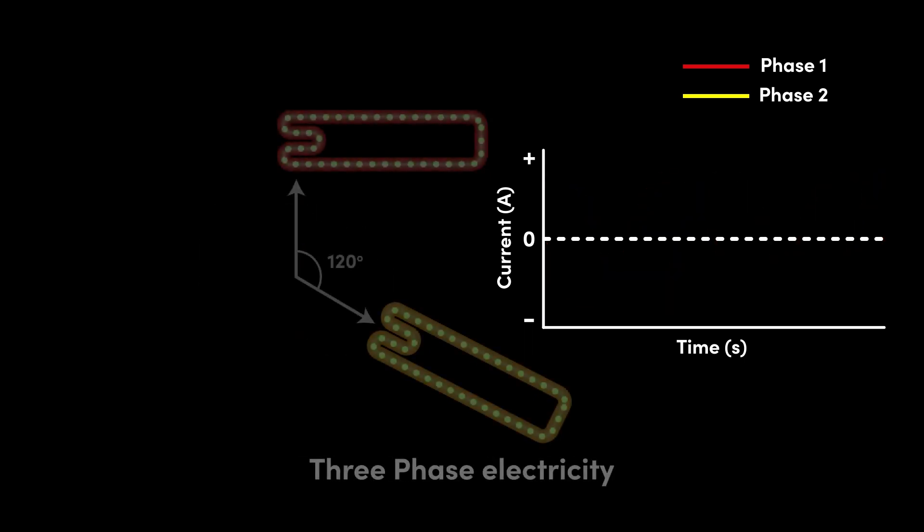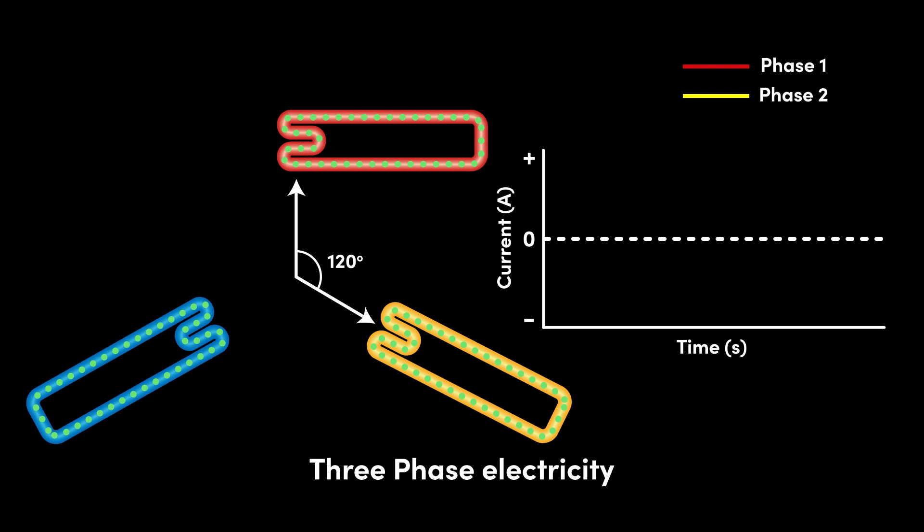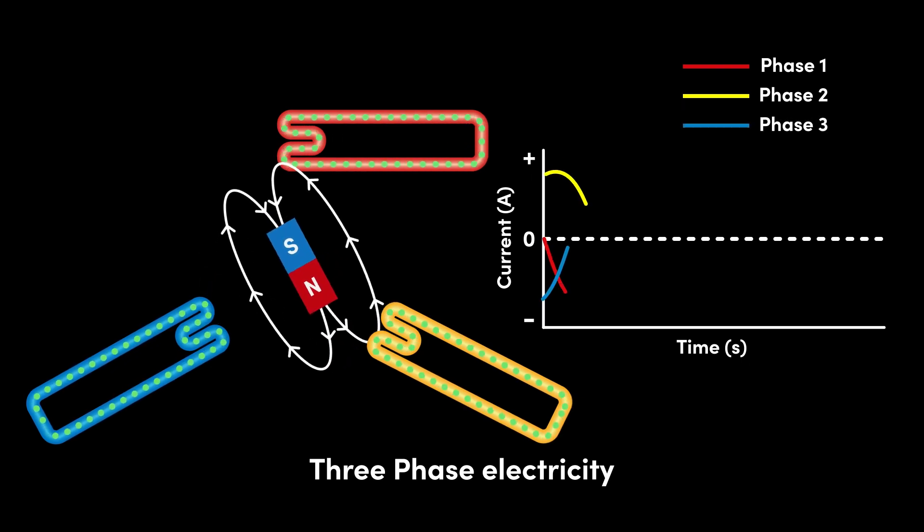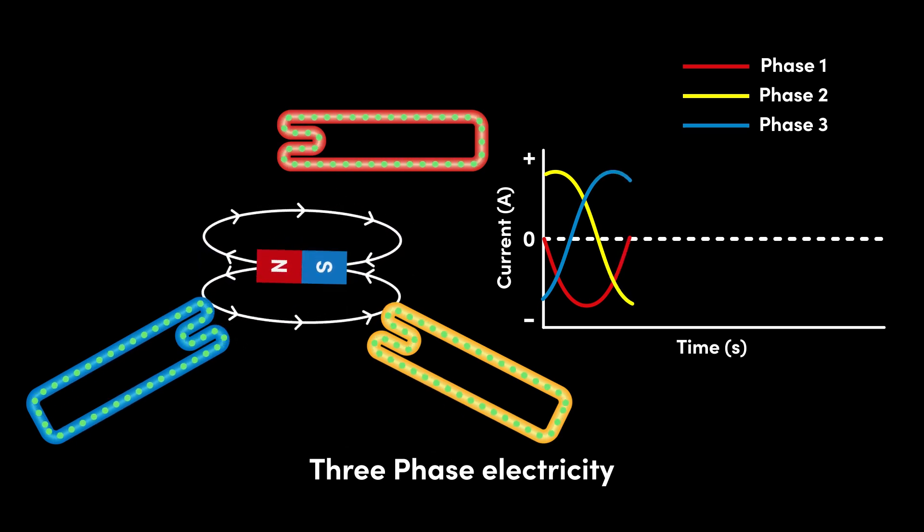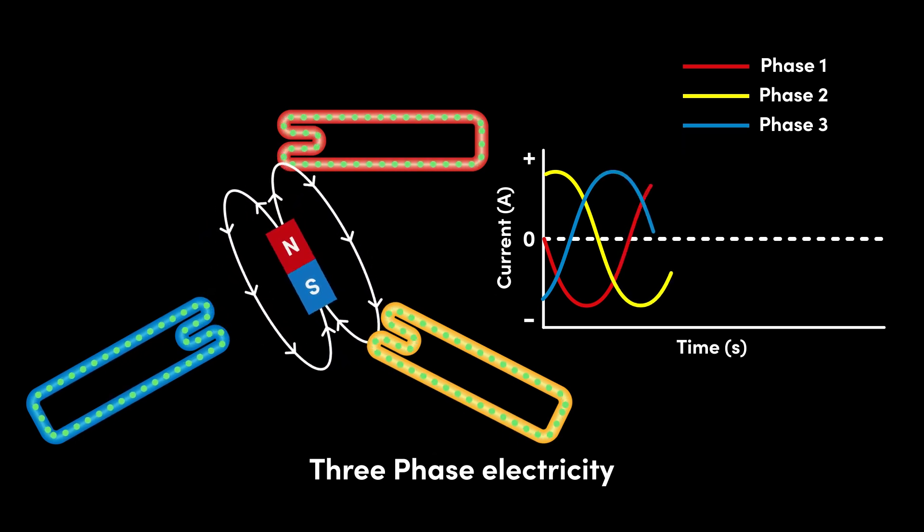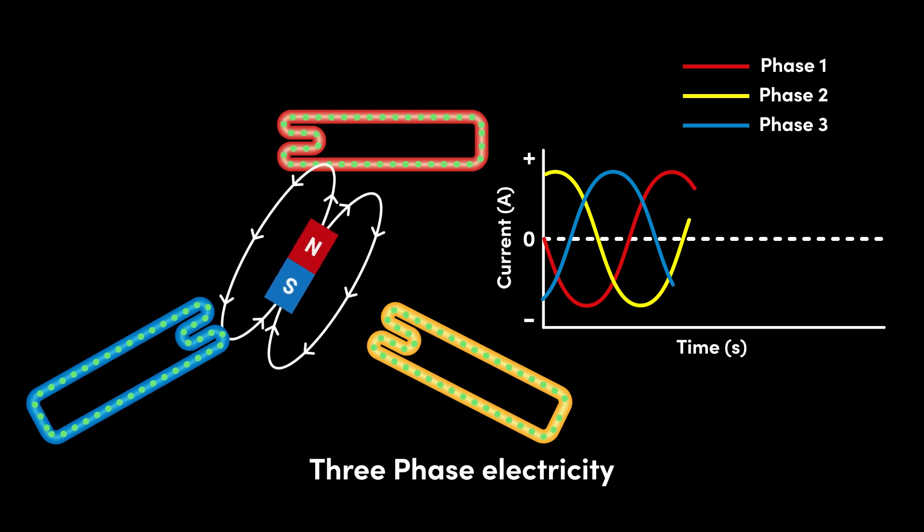Three phase electricity is generated when we introduce a third coil at 120 degrees to the first and second coils. With three phases, at any given time, we always have at least one phase flowing in the positive direction, and at least one phase flowing in the negative direction. This means if we combine the three phases, we can generate more power and do more work.